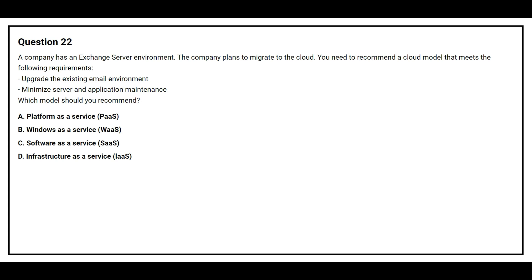Option A: Platform as a Service. Option B: Windows as a Service. Option C: Software as a Service. Option D: Infrastructure as a Service. The correct answer is Option C, Software as a Service.